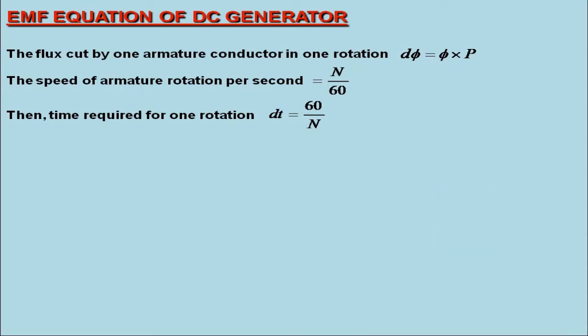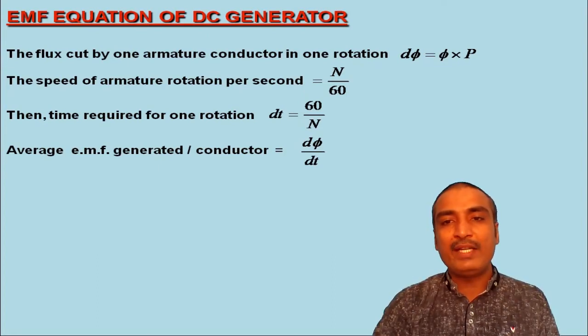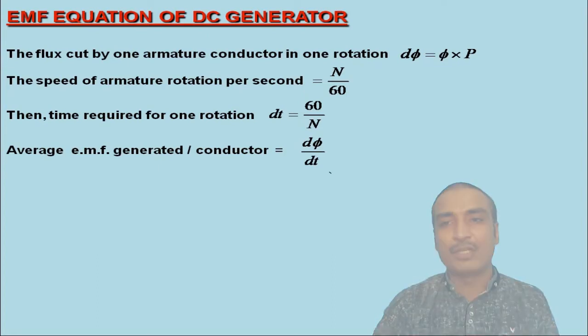Thus, we may now calculate the average EMF generated per conductor equal to dφ/dt. So, by substituting the values of dφ and dt in this expression, the average EMF generated per conductor is calculated as φP/(60/N).